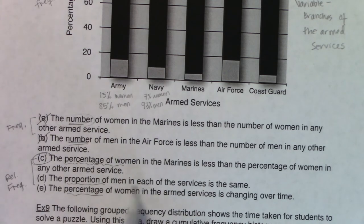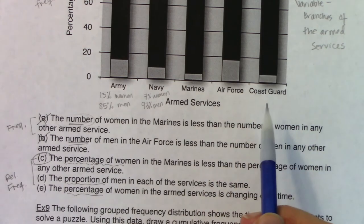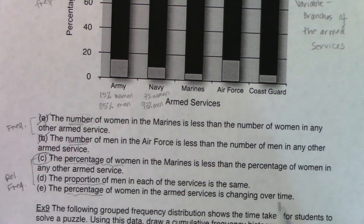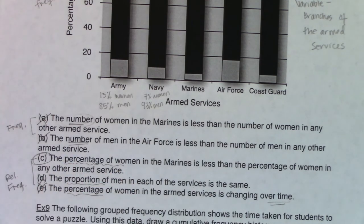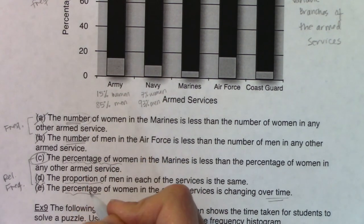Option D — the proportion of men in each service is the same — is not true, because these bars change in terms of their length. And option E doesn't apply because there is no time element in this graph. So be on the lookout and be careful with these vocabulary terms.